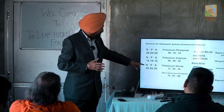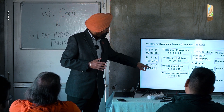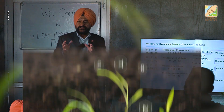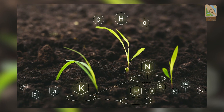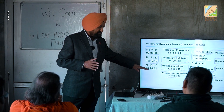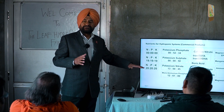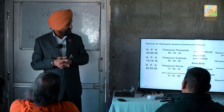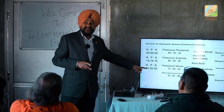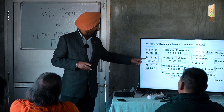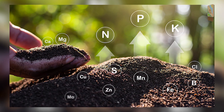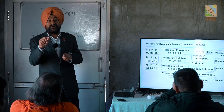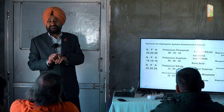NPK 20-20-20 means 20%, 20%, 20%. Now you must read the label very carefully. NPK 19-19-19 and NPK 20-20-20 is not just a 1% difference — NPK 20-20-20 has got more ammoniacal nitrogen and more nitrate nitrogen. So you will have to check the label carefully to see what form of nitrogen is available.